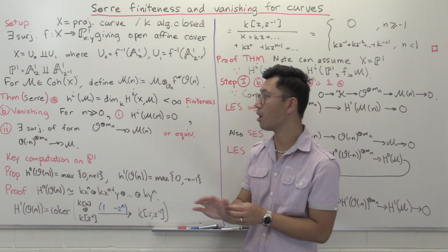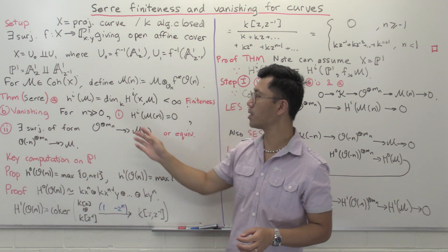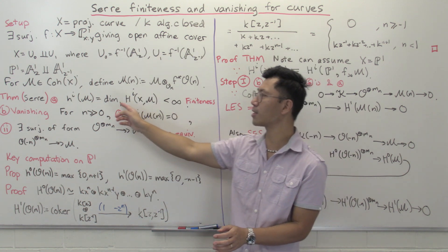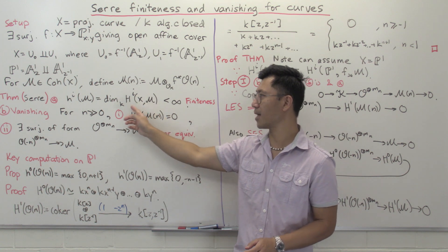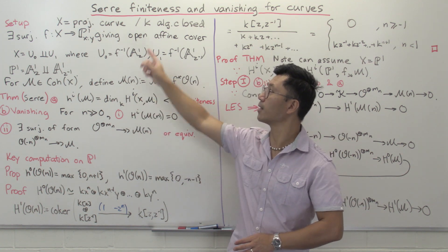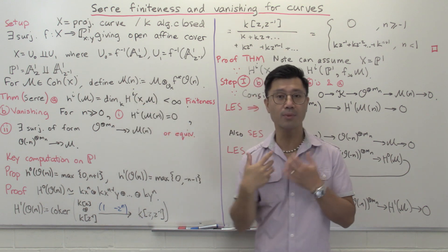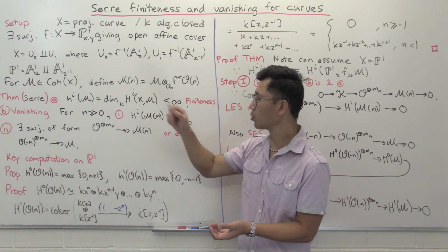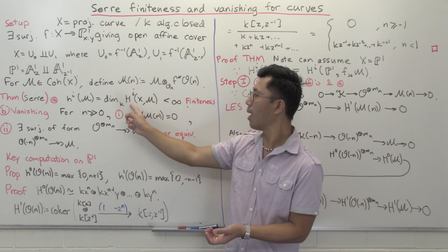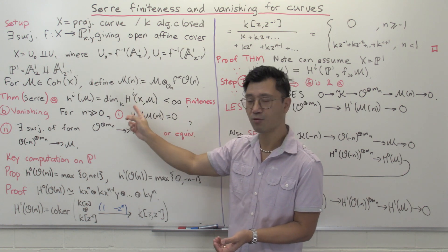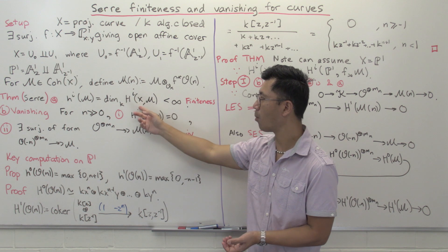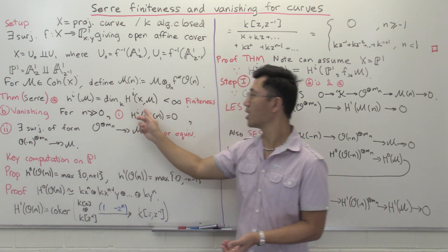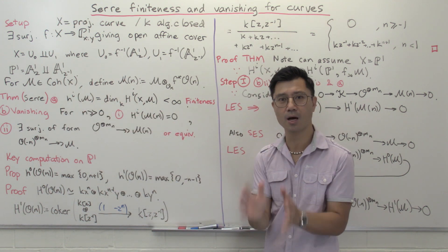Let's look at these two fundamental theorems of Serre. The first one is finiteness. This is a very natural question to ask. We're going to look at the dimensions of these cohomology spaces. In the case of curves we have H0 and H1. H0 is something we're interested in — this Riemann-Roch space in the case when M is given by an invertible sheaf. The dimension, often denoted by little h^i, is always finite. That's the finiteness theorem.